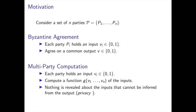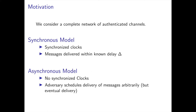In multiparty computation, which is a more general problem that includes Byzantine Agreement as a special case, a set of n parties, each holding an input in {0,1}, want to compute a common function of their inputs without revealing anything about their inputs that could not be inferred by looking directly at the output of the computation.